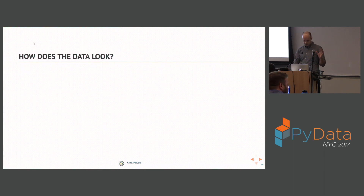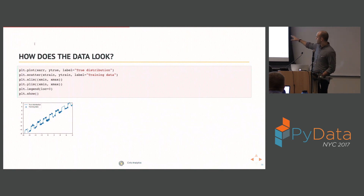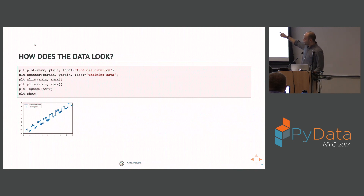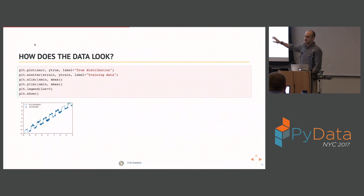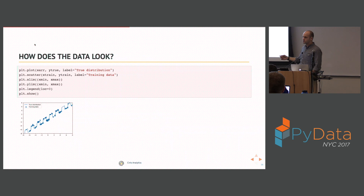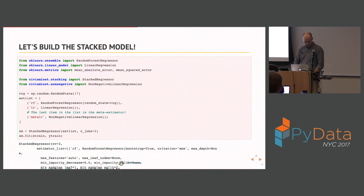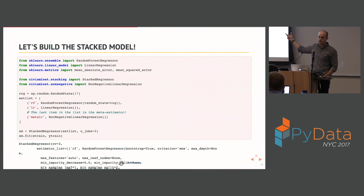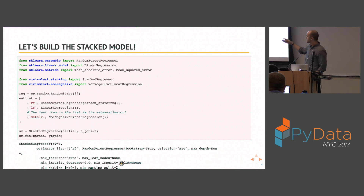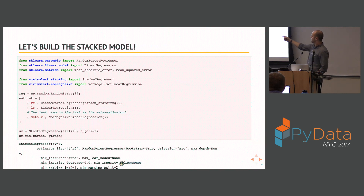Let's go through a super simple regression example. The data I made has one feature on the x-axis, a hundred data points, drawn from a sawtooth-looking distribution — a slope of one with a changing intercept every point. This is a pathological dataset that requires more flexibility than a simple linear regression. For imports, I'm using a random forest regressor with ten trees and a linear regression as my two base estimators, mean absolute error and mean squared error for evaluation, and from our library: StackRegressor and NonNegativeLinearRegression.